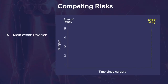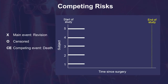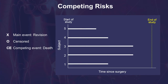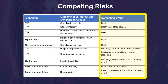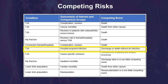A competing risk is any event that prevents the event of interest from occurring. Competing risks violate the non-informative censoring assumption because they modify the chance that the study outcome occurs. The most obvious competing risk is death. When patients die before experiencing the outcome of interest, their chance of experiencing the study outcome is zero. The competing risk is not always mortality. Suppose hospital-acquired infection is the event of interest — discharge from hospital without infection is a competing event, since it generally precludes the observation of infections that might later occur.